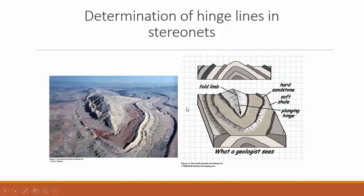This is an introduction to the first practical assignment for the 301 course. We are going to analyze fold structures using stereo nets. You might remember this photograph of a fairly large anticlinal structure from your first year course. We see a plunging hinge line towards us, a layer running through the fold closure through the hinge to the other limb, and further layers that the block diagram explains clearly.